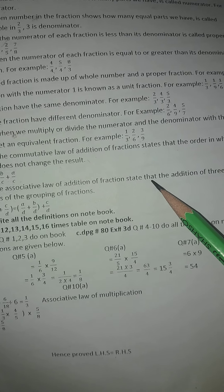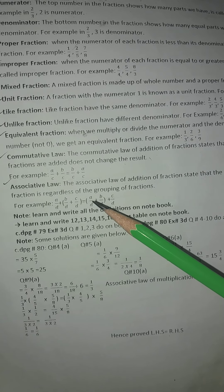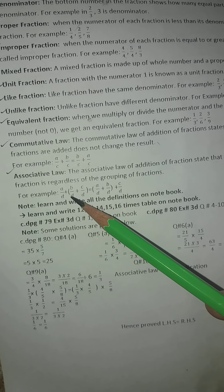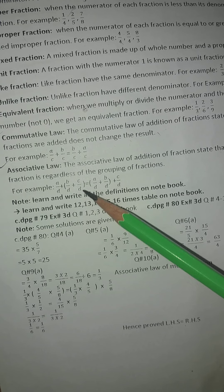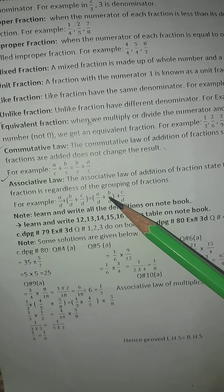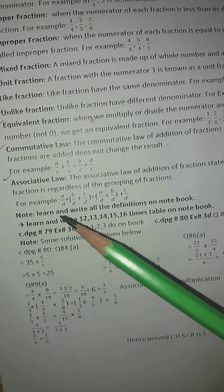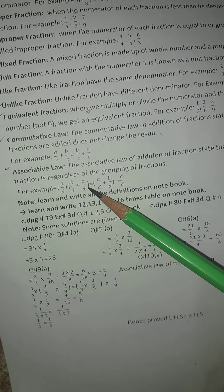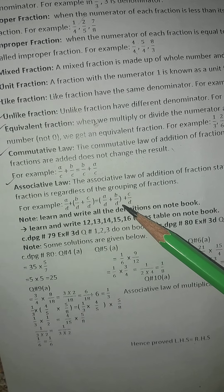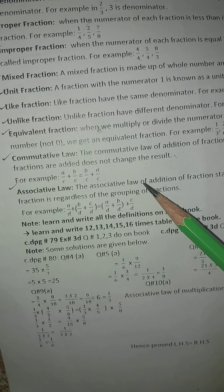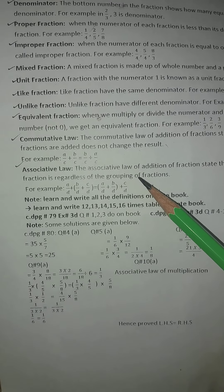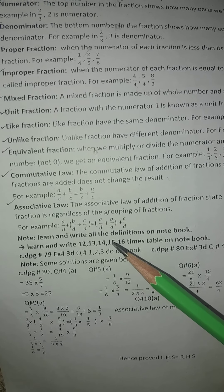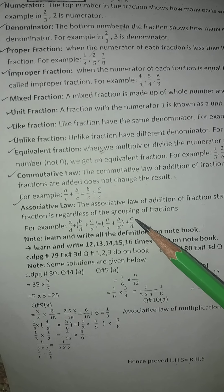Associative law: the associative law of addition of fractions states that the addition of three or more fractions does not depend on the grouping. For example, (a over d plus b over d) plus c over d is equal to a over d plus (b over d plus c over d). We change the grouping but the result does not change — this is called the associative law. Learn and write all the definitions in your notebook. Best of luck!